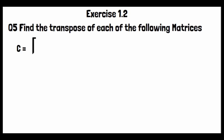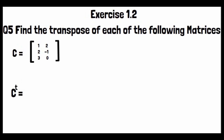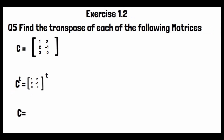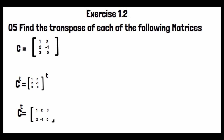Matrix C has entries [1, 2; 3, 2; -1, ...]. To find C transpose, we convert columns to rows. Writing C^T, the columns become rows, giving the transposed matrix.